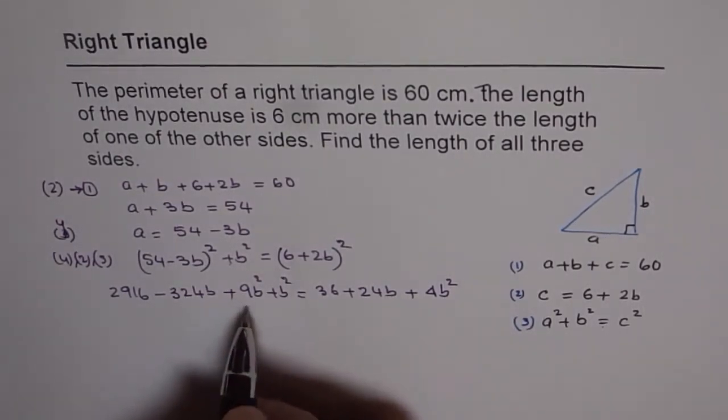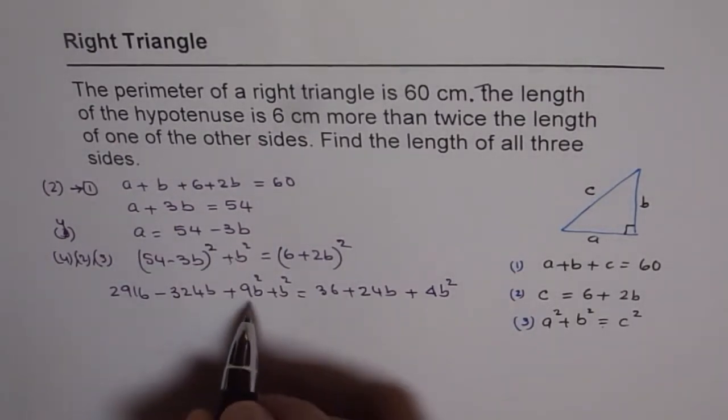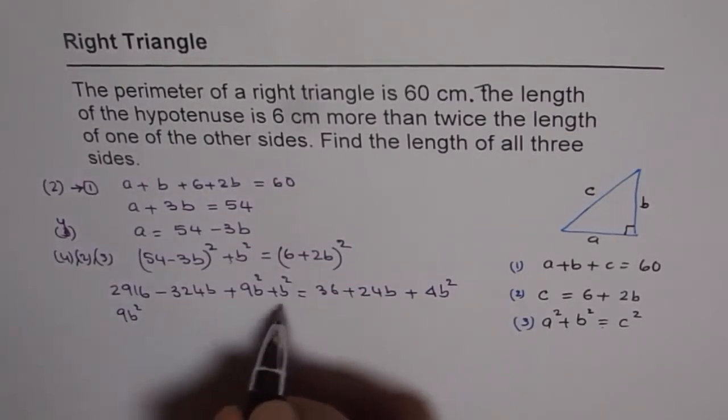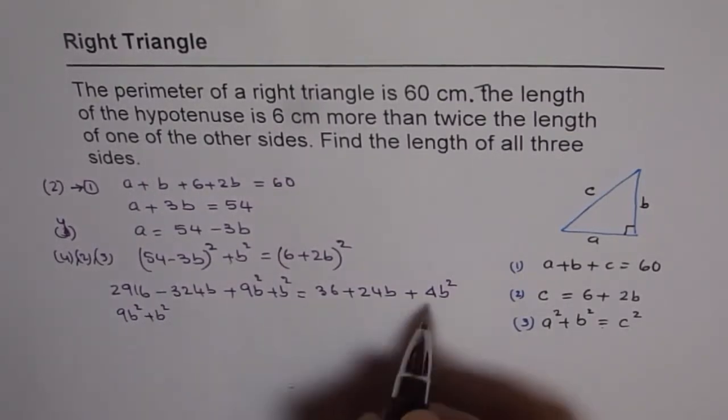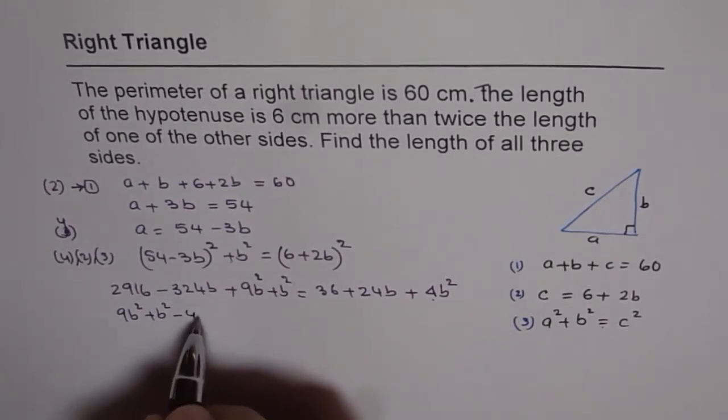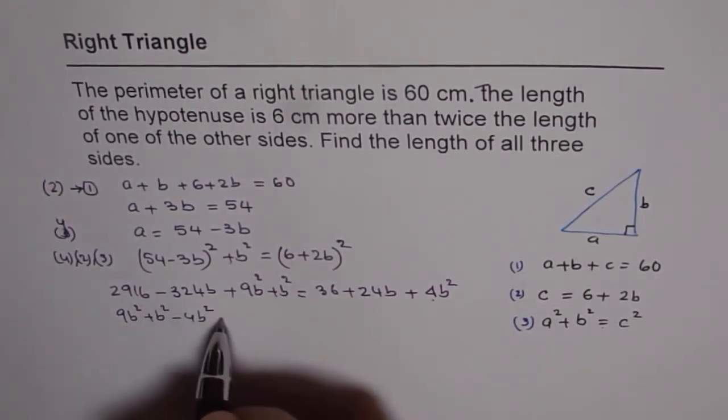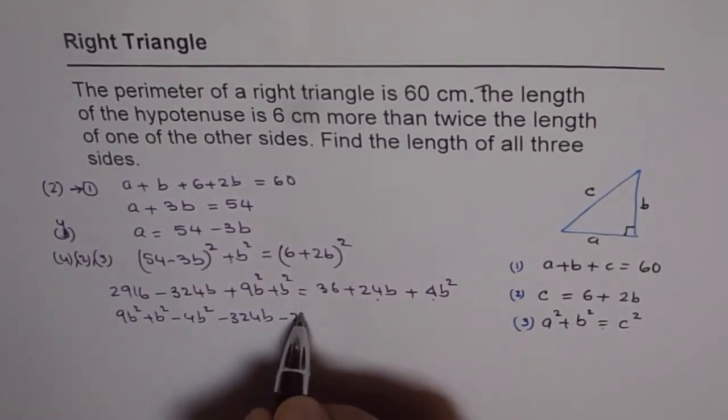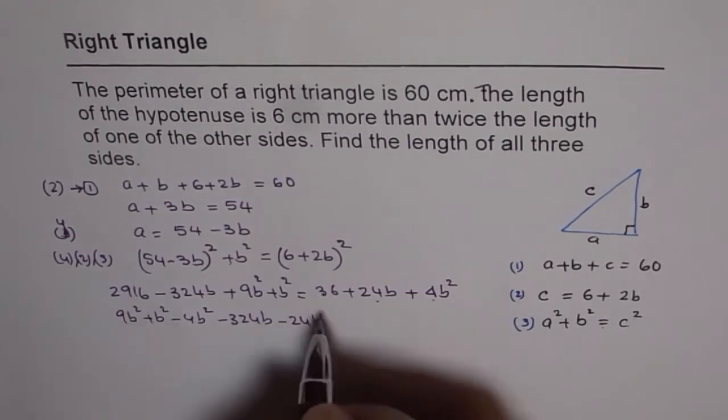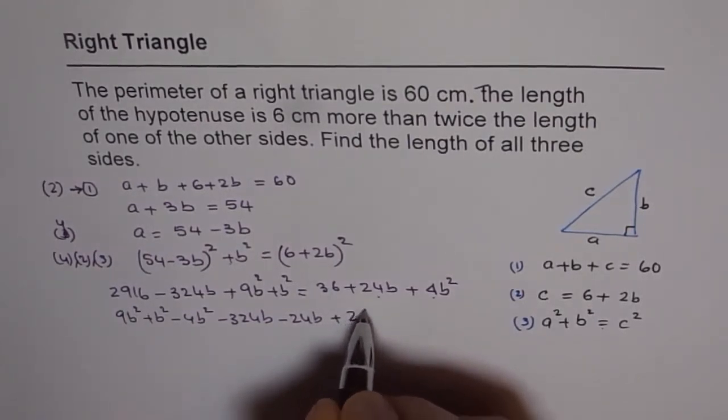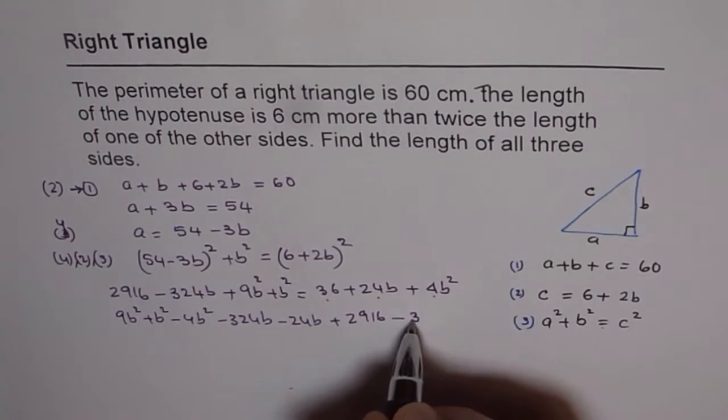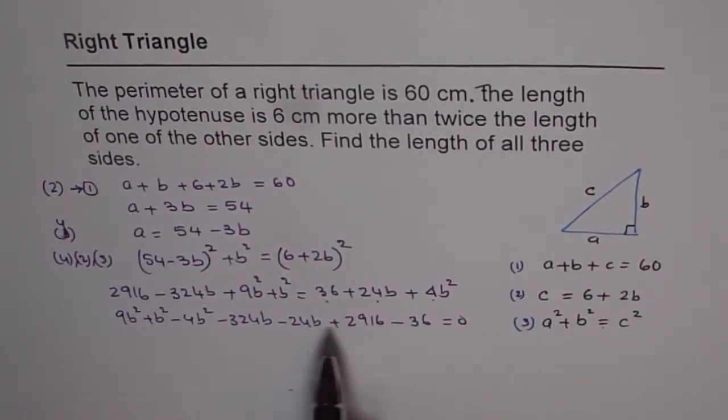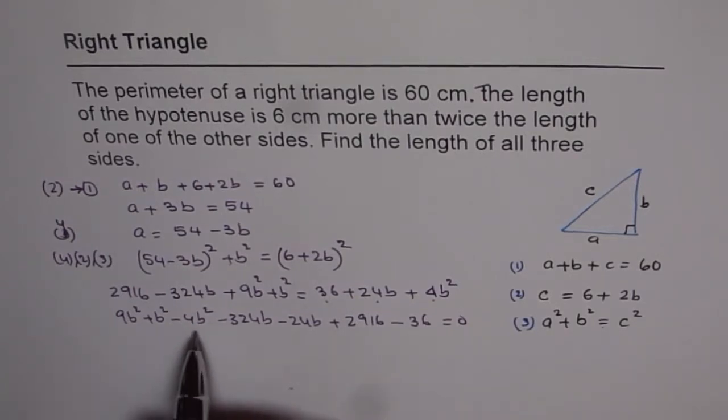Let's collect all the terms on the left side, writing them in order. We have 9b square plus b square minus 4b square. Amongst the b terms we have minus 324b and then plus 24b. Amongst the constants we have 2916 minus 36. We have taken care of all the terms on the right, brought them to the left.